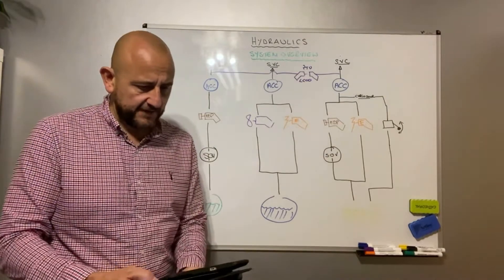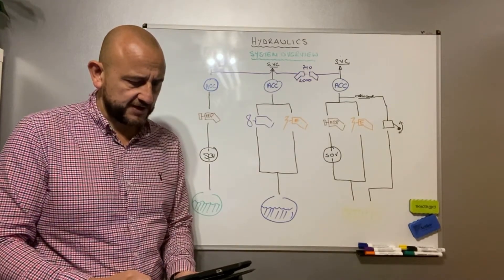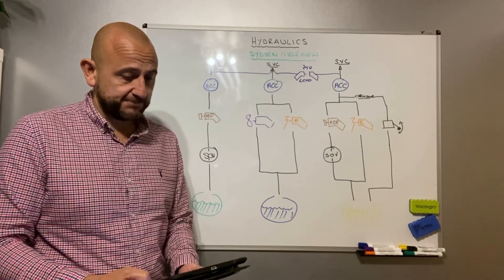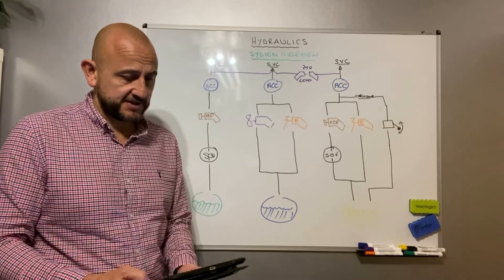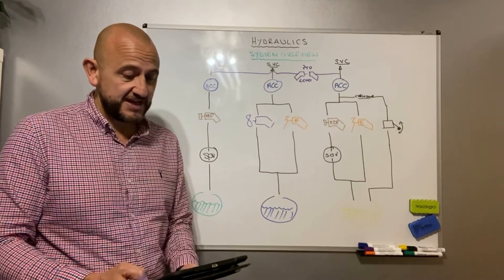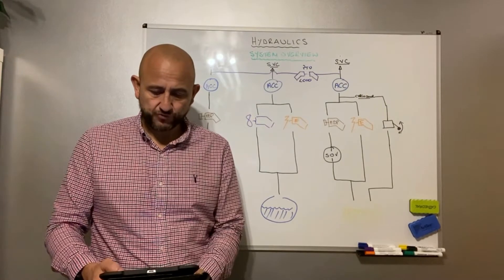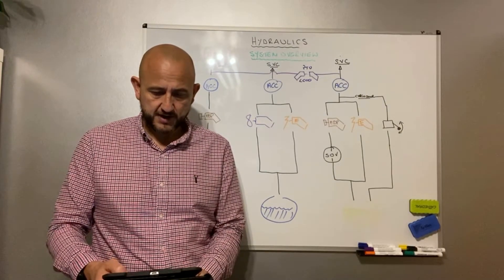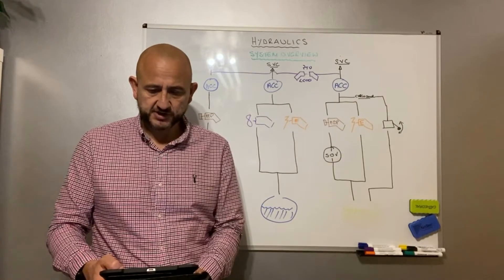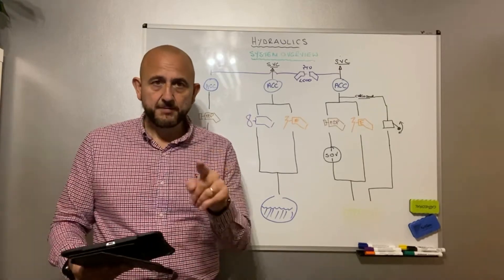Let me check I've covered everything: green and yellow shut-off valves, engine pumps, electrical pumps, RAT on the blue — yes. Accumulators — yes. Priority valves — yes. Time for a break. I'm going to clear the board and draw the services — the flight controls and a nifty way of how to remember things.